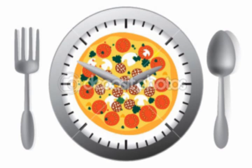First we are going to talk about the main mealtimes in the United Kingdom. Breakfast between 7 and 9 o'clock a.m. Lunch between 12 and 1:30 p.m. Dinner, sometimes called supper, between 6:30 and 8 o'clock p.m.